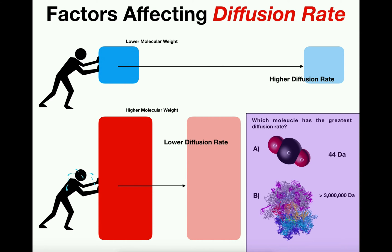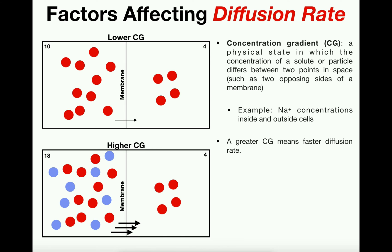So that's our first factor: higher molecular weight means lower diffusion rate, and vice versa. The second factor, along with the other two we'll discuss, involves a direct relationship — when one thing goes up, the other goes up. The second factor is the concentration gradient. Before discussing how it affects diffusion rate, let's define what a concentration gradient is.